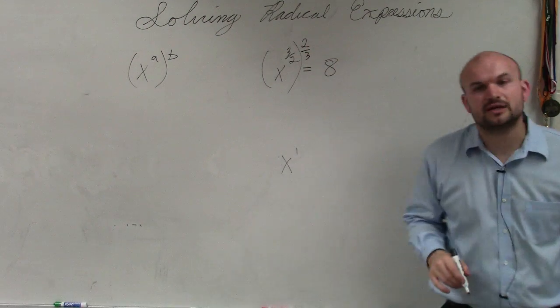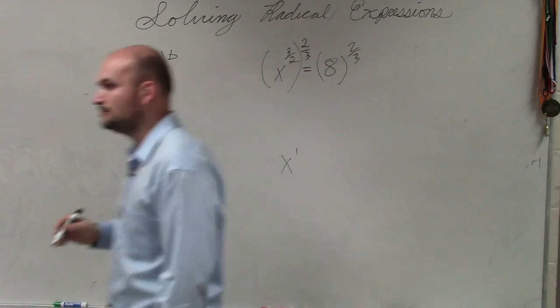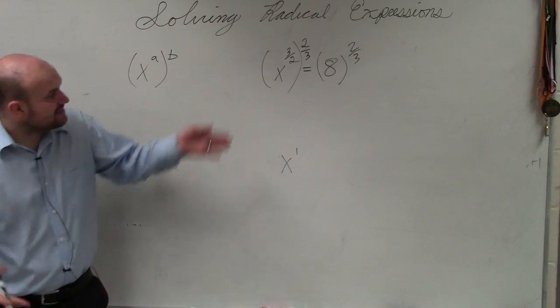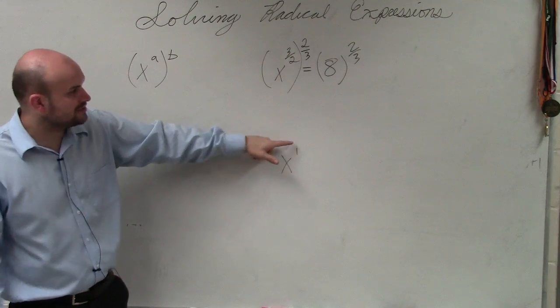So what we're going to do is we're going to raise both sides to the 2 thirds power, OK? See, what happens is you guys can see the 3 halves, 2 thirds, those multiply to give you x to the first power.